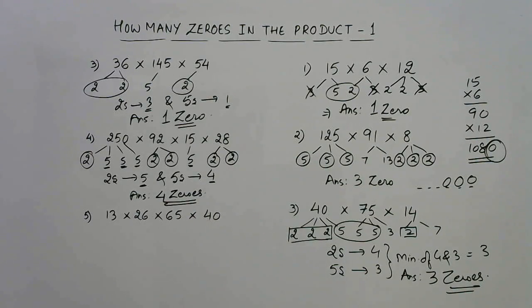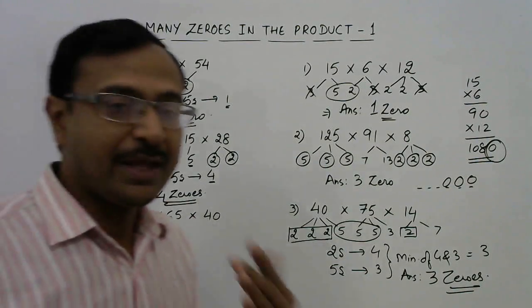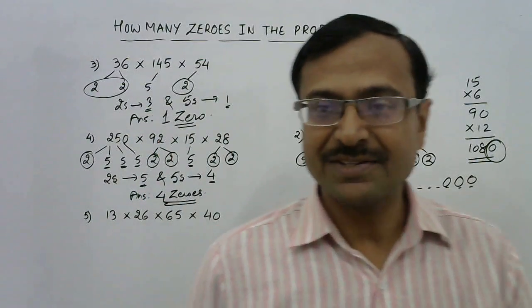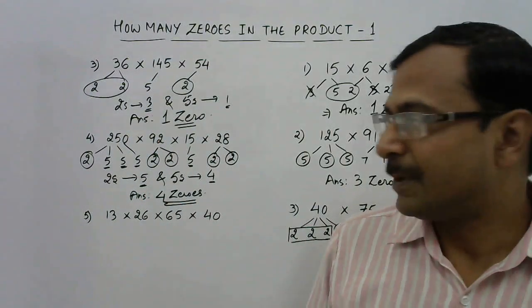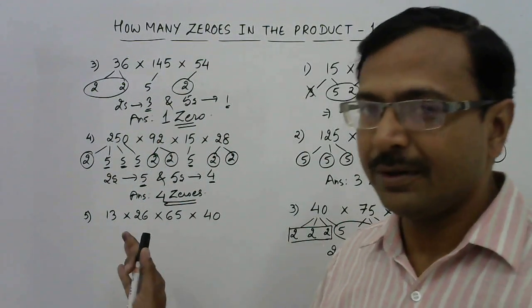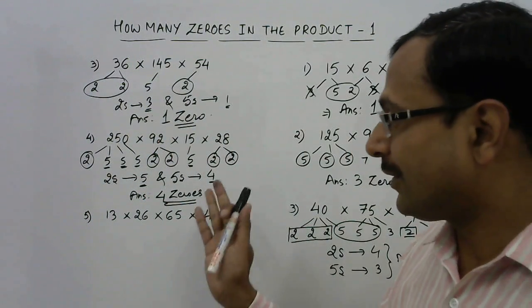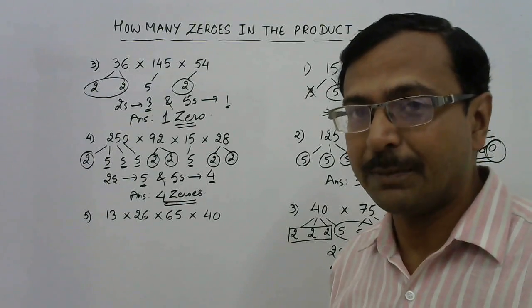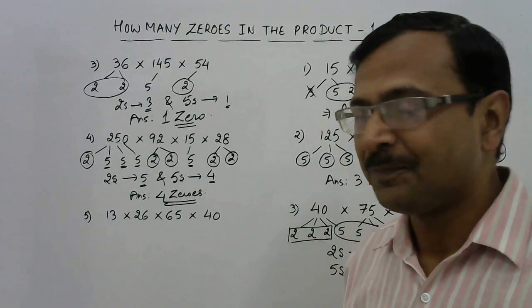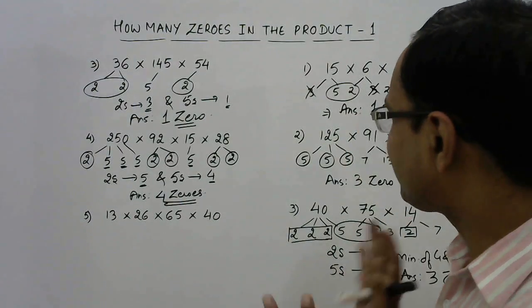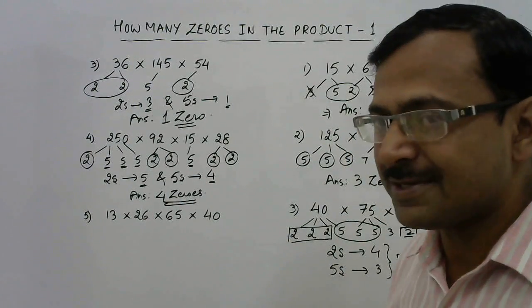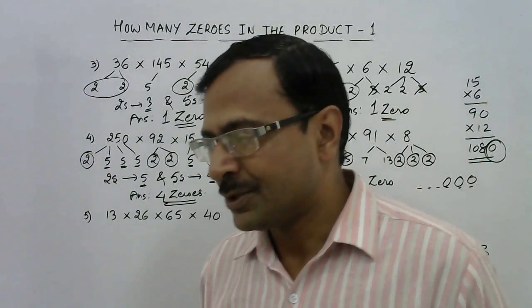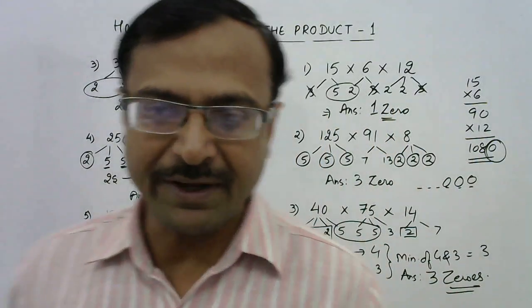Students who have practiced this method can find the number of zeros in a flash — just by looking at the numbers you can find out how many zeros the product will contain. You have seen five examples and I am sure you must have learned the method by now.